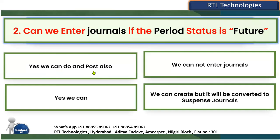The options are: yes, we can create and post; posting is not possible; we cannot enter journals at all; or yes, we can create but journals will be converted to suspense journals. Suspense journals occur when the entered debit is not equal to the entered credit — that journal goes to suspense. So that third option about suspense is not correct here.